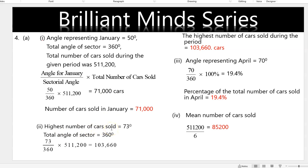For the highest number of cars: 73 degrees is the highest angle, so 73 divided by 360 times 511,200 gives 103,660. For April, which represents 70 degrees: 70 divided by 360 times 100 gives 19.4% of the total cars sold. For the mean: the total is 511,200 divided by 6 months (January to June), giving a mean of 85,200 cars.